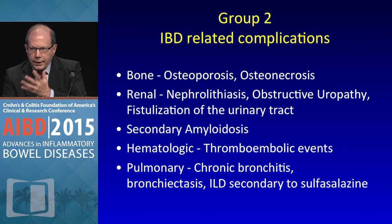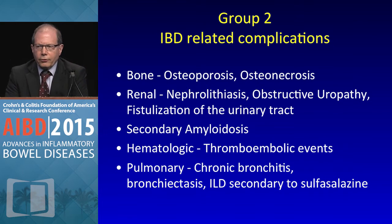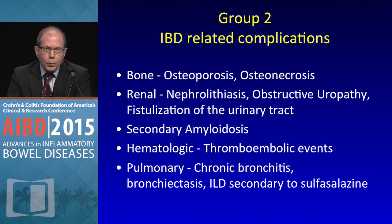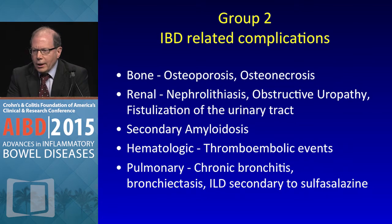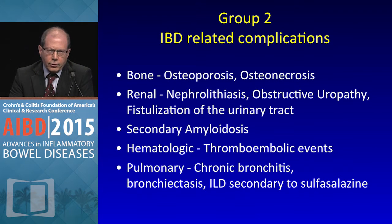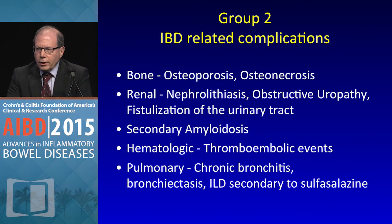We obviously see lots of patients with osteoporosis and kidney stones — very common. There are also rarer complications like secondary amyloidosis and thromboembolic events, which is a whole lecture on its own. Interstitial lung disease — though we think it's sulfasalazine — I recently had a patient where pulmonary experts were convinced it was from mesalamine. So it isn't just sulfur drugs.